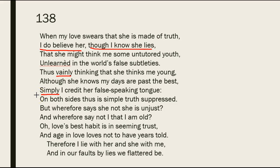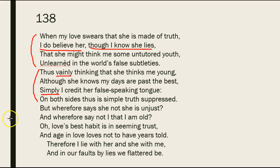But we know that he is not simple. "Simple" ultimately means single — somebody who's simple has only one layer to them. The opposite of simple might be double, or multiple. And we know that he's not simple; he is multiple, because he is thinking one thing and saying another. So in the first part he talks about how she's a liar, in the second part how he also is a liar — but he's lying not only to her, but to himself. He thinks she thinks he's young, although she knows his days are past the best. On both sides, thus, is simple truth suppressed — and there's that word "simple" again.